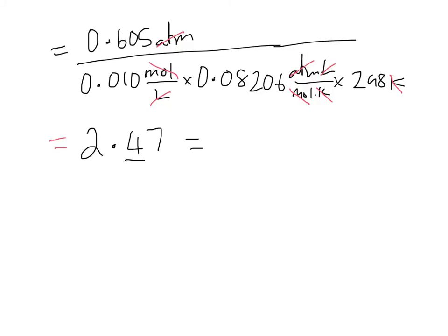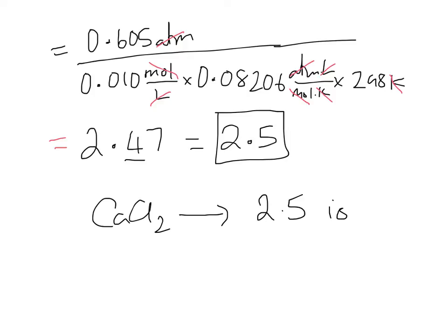Actually, given that our concentration was only good to two significant figures, we probably really can't write it any better than two and a half. So what's that telling us here? That's telling us that the calcium chloride, when it's dissolving, it's breaking down into two and a half ions.